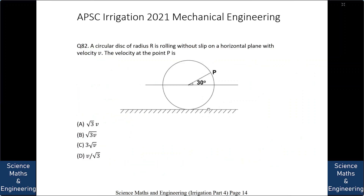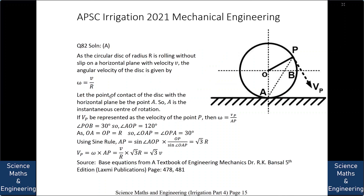A circular disk of radius R is rolling without slip on a horizontal plane with velocity V. The velocity at point P is: A. √3·V, B. √3·V, C. 3√V, or D. V/√3. The answer is A: √3·V.